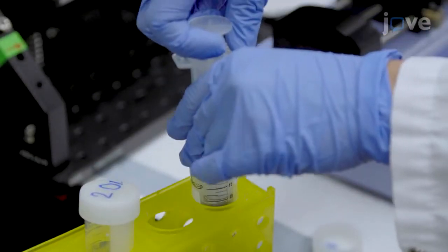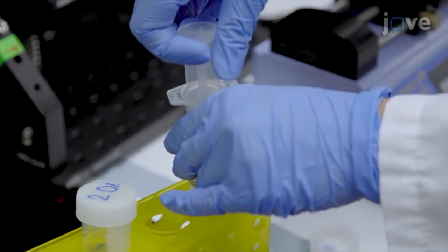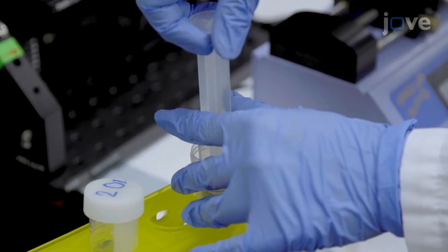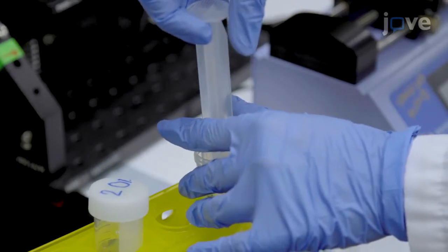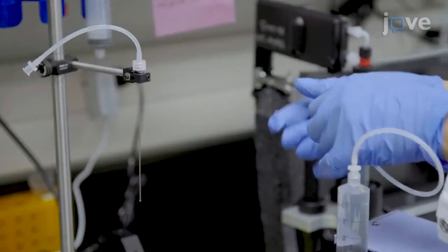Begin by diluting 2.2 molar sucrose to prepare six 10-50% sucrose gradients. Fill a 30ml syringe with approximately 16ml of 10% sucrose, place it on the syringe pump, and connect it to the needle.